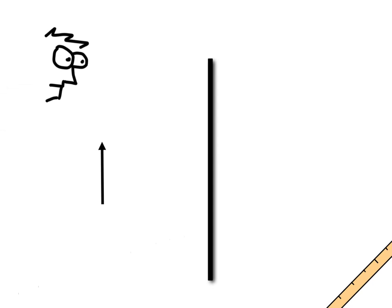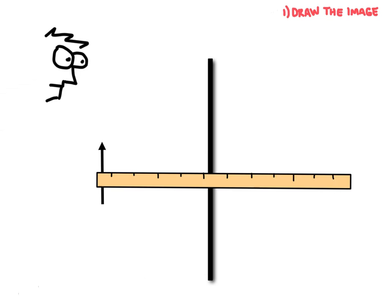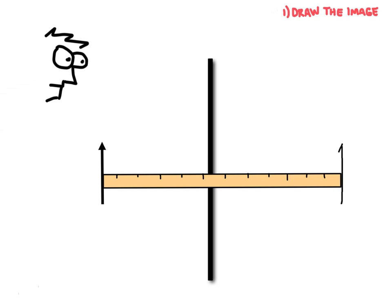The first step is to draw the image. For a plain mirror — a flat mirror — it's pretty simple. All we do is take a ruler and measure equal distance from the mirror. The image is going to be the same height and the same distance away from the mirror as the object.